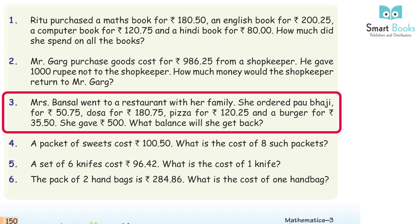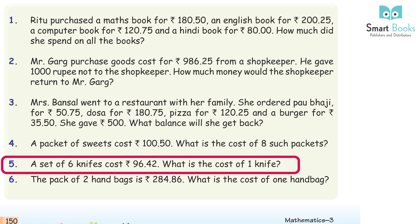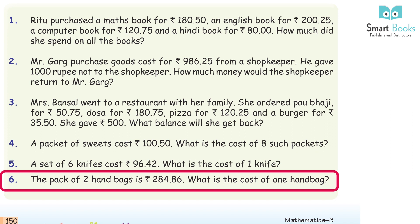Question 3: Mrs. Bansal went to a restaurant with her family. She ordered pav bhaji for Rs. 50.75, dosa for Rs. 180.75, pizza for Rs. 120.25, and a burger for Rs. 35.50. She gave Rs. 500. What balance will she get back? Answer: Rs. 112.75. Question 4: a packet of sweets costs Rs. 100.50. Cost of 8 packets = Rs. 804. Question 5: a set of 6 knives costs Rs. 96.42. Cost of 1 knife = Rs. 16.07. Question 6: a pack of 2 handbags costs Rs. 284.86. Cost of 1 handbag = Rs. 142.43.